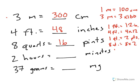Hours to minutes. 2 hours. Well, if 1 hour has 60 minutes in it, then 2 hours would be equal to 2 times 60 or 120 minutes.